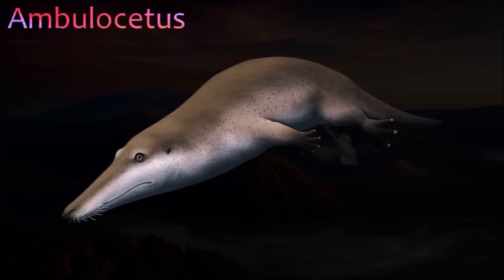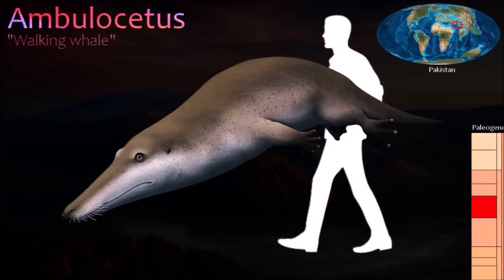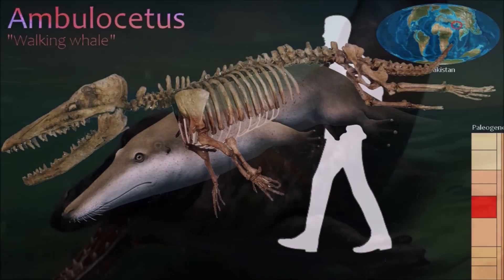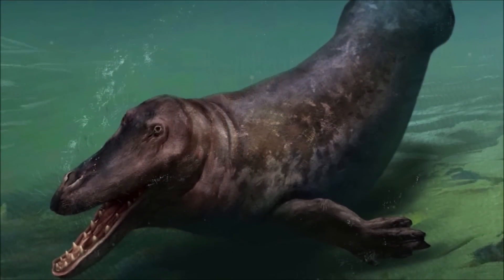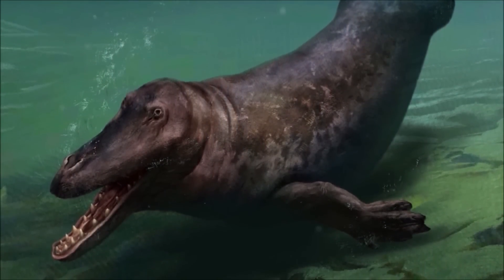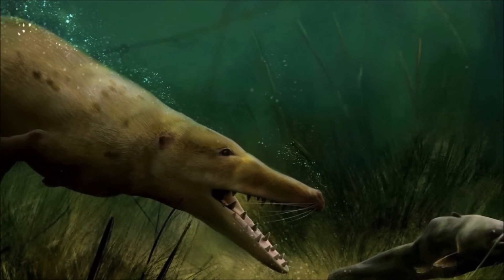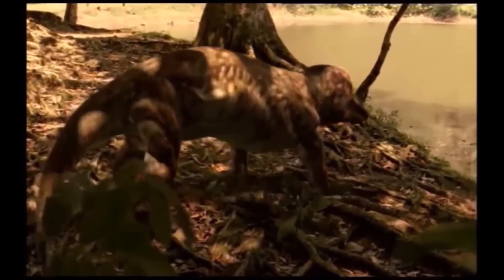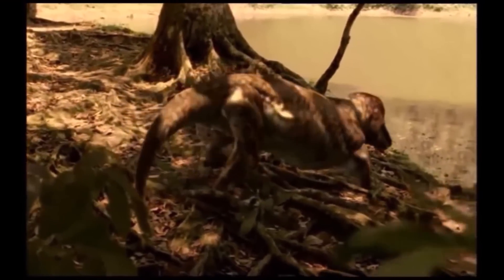An ancestor of modern whales, Ambulocetus retained strong legs and could walk as well as swim. It may have hunted like crocodiles, lurking in the shallows and then lunging forward onto land to catch prey that wandered near the water. Ambulocetus was a relative of modern whales because of the shape of its skull and teeth. The similarity of its jaw and middle ear to that of modern whales suggests that, like them, it was specialized for underwater hearing and might have lacked the external ear that picks up sounds on land. It is one of many transitional fossils that show how whales evolved from land mammals.